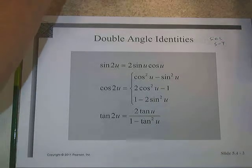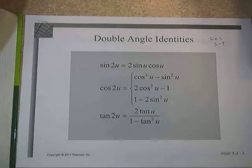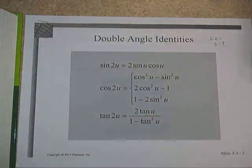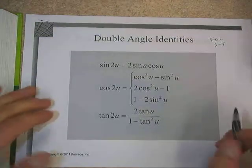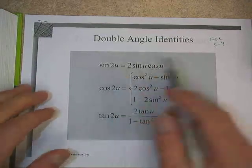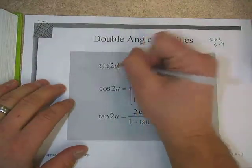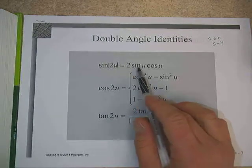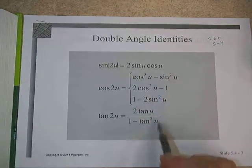Okay, in section 5-4 we're going to be dealing with, instead of addition formulas, we're going to be dealing with double angle identities and also what we call half angle identities. So we've got a few more identities. The first one is that if we have the sine of twice an angle, so any time it's sine of 2θ, the result is going to be 2 times sine of θ cosine θ.